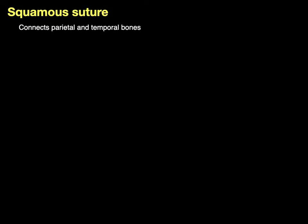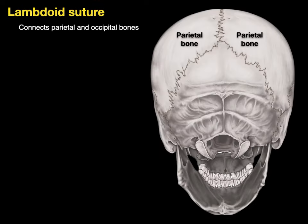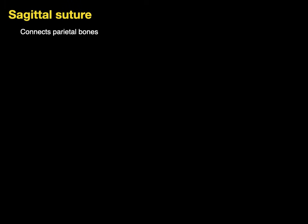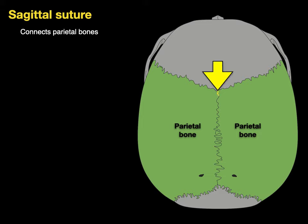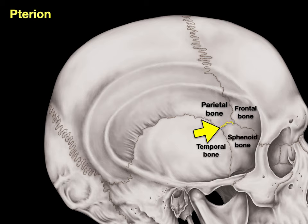The squamous suture connects the parietal and temporal bones — in this lateral view, there's the parietal and temporal bones, and there is the squamous or squamosal suture. The lambdoid suture connects the parietal and occipital bones — it gets its name because lambda is a Greek alphabet symbol that looks like that, and that's what the suture looks like. The sagittal suture connects the two parietal bones and runs right in the sagittal plane. The pterion is a small suture connecting parietal, frontal, sphenoid, and temporal bones — it's named because this is where Hermes put wings; pterion is Latin for wing.